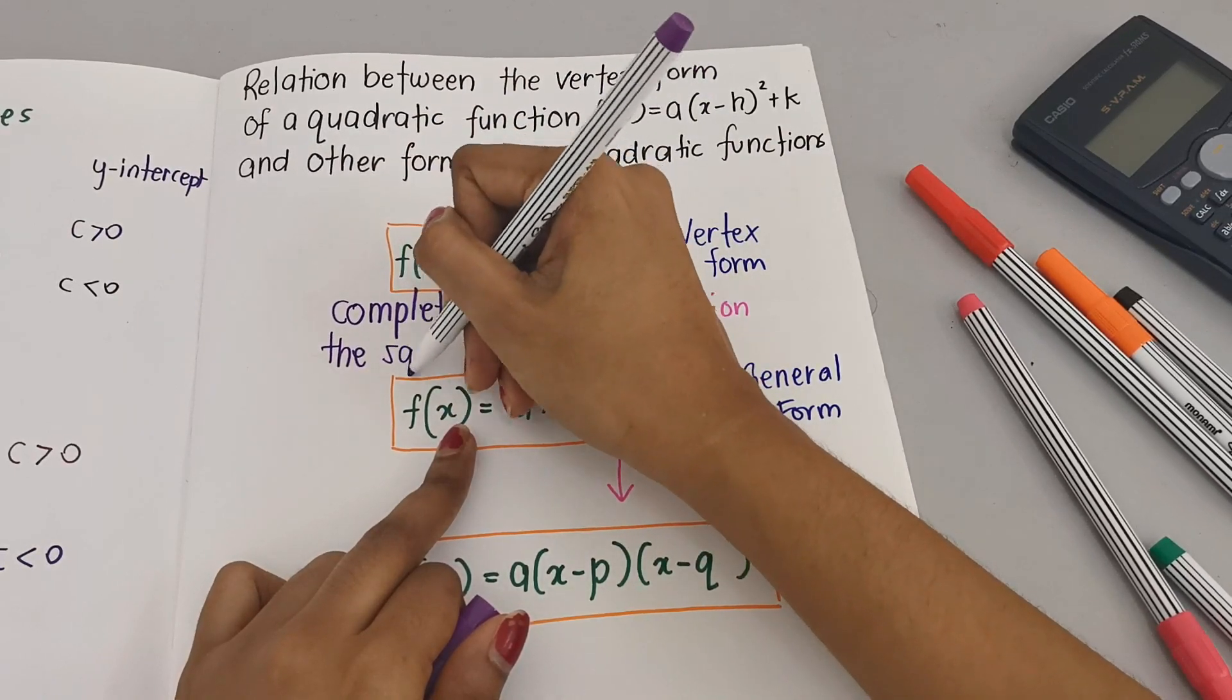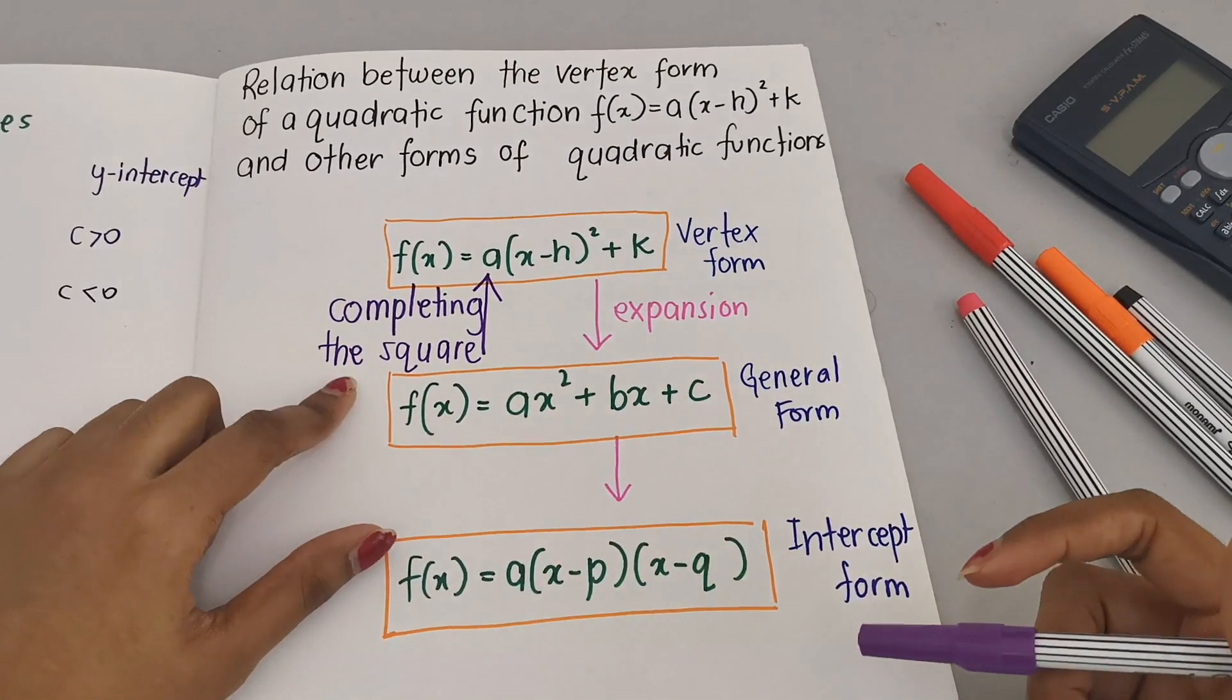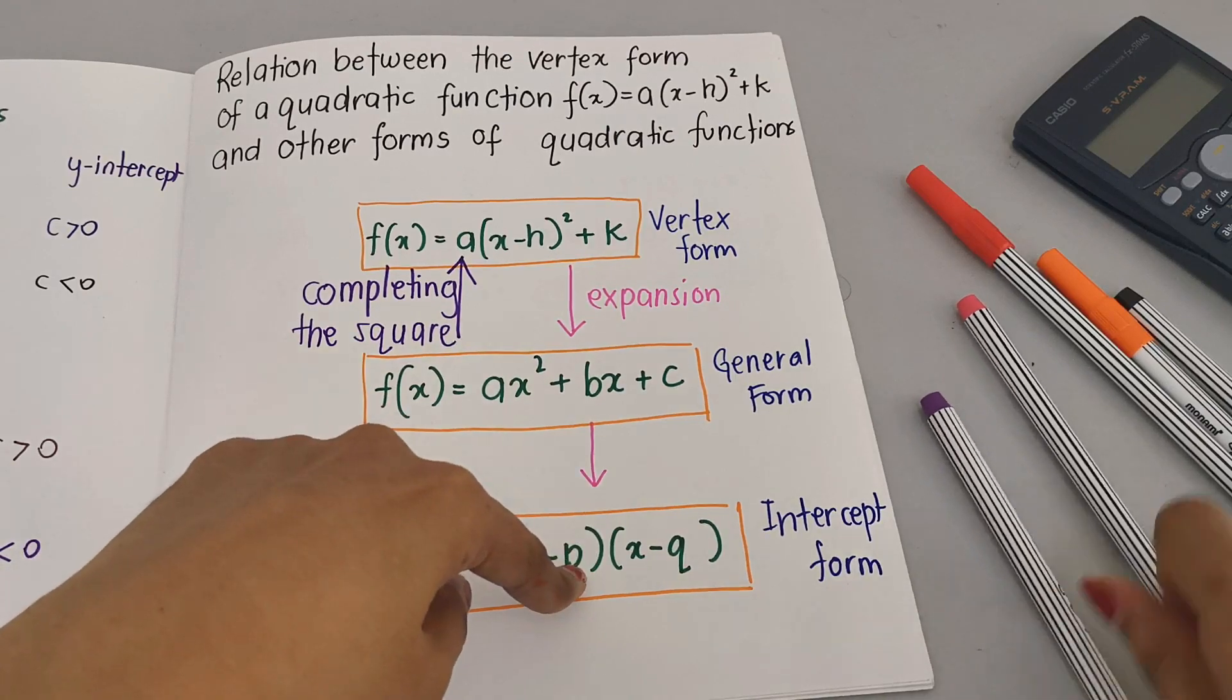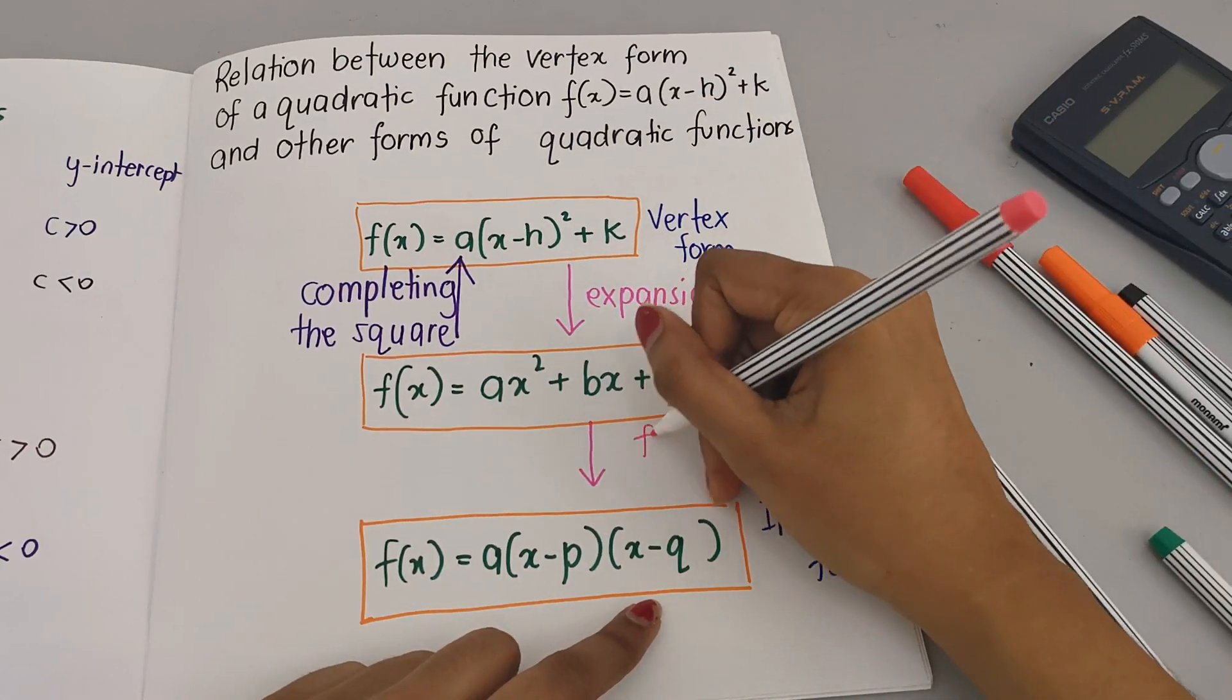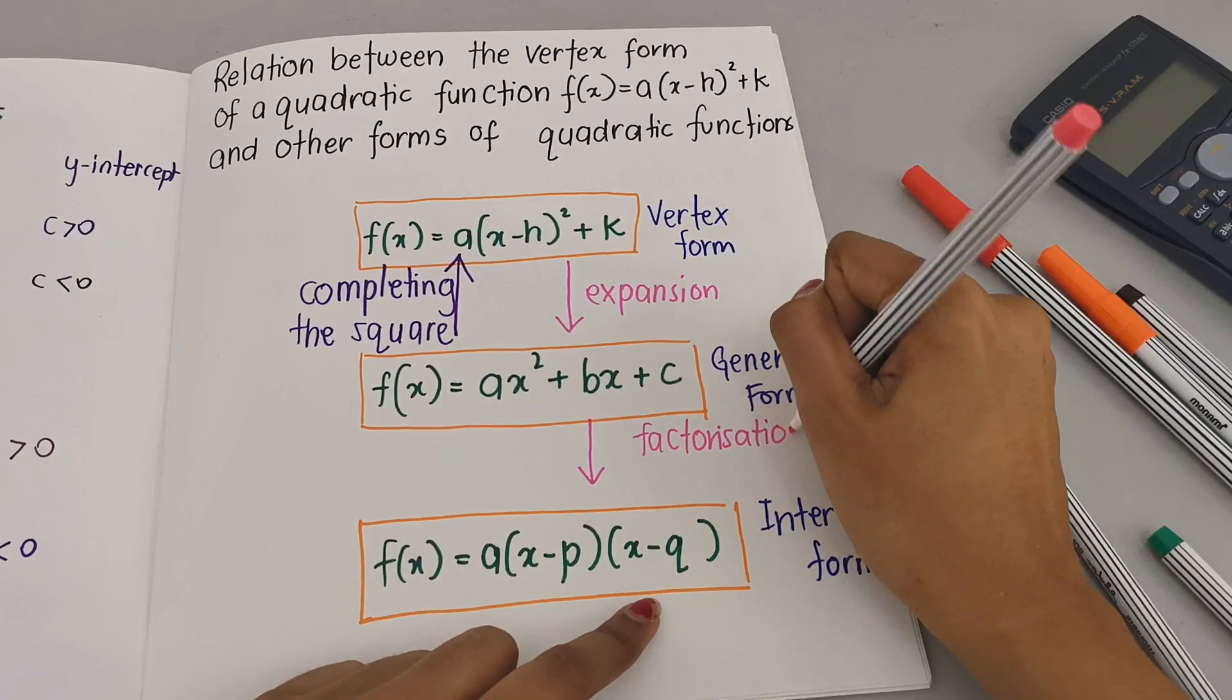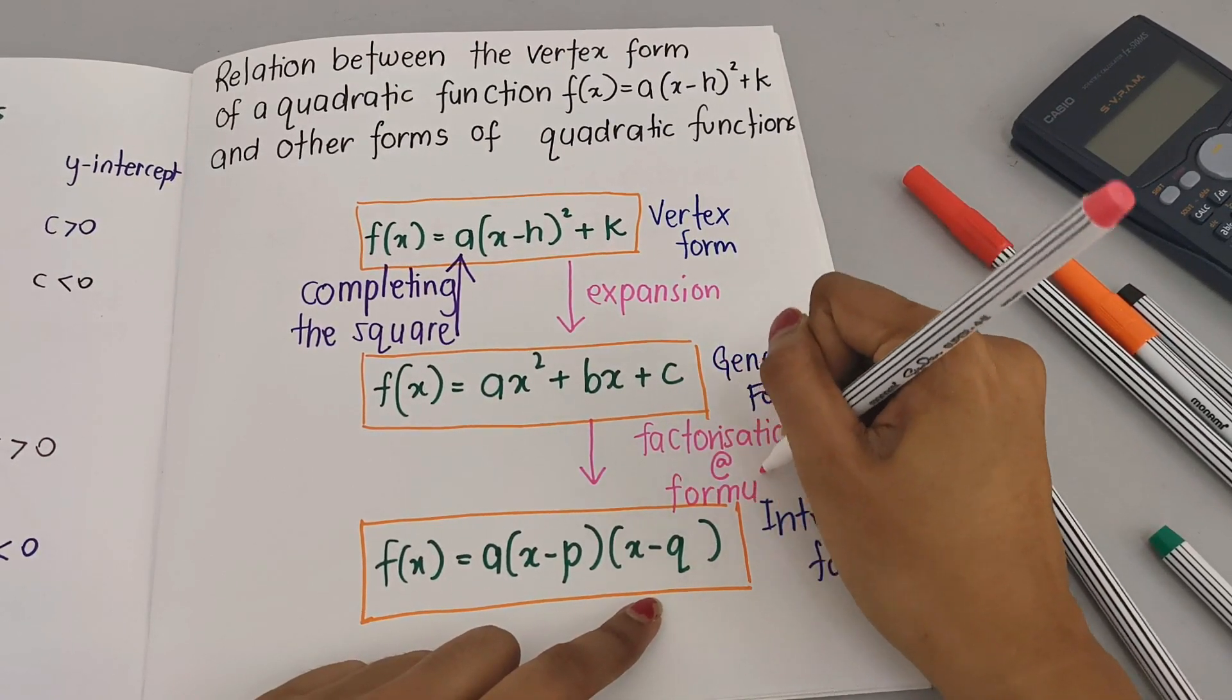Now let's say from general form we want to change to intercept form. What we need to do: there are two things you can choose - either you want to do factorization, a normal factorization method, or you want to use the formula method.